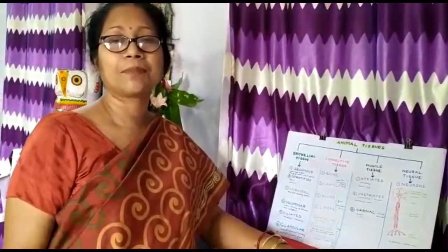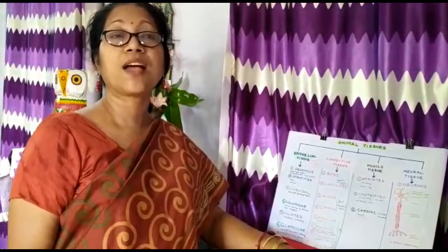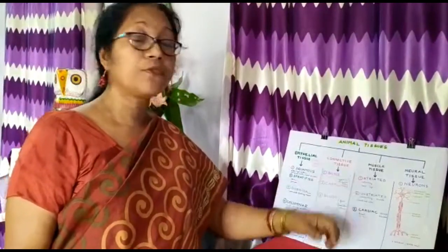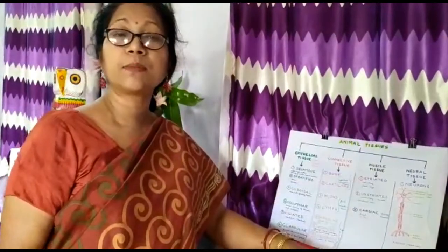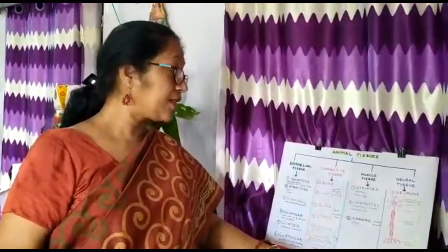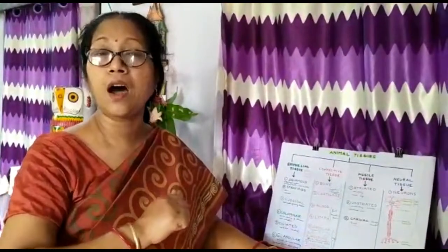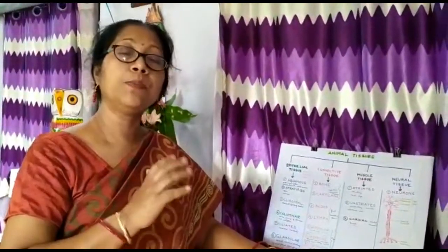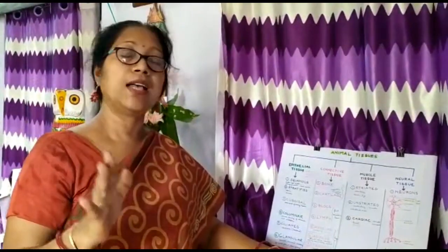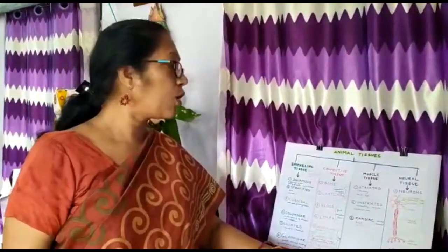Then we have cardiac muscles. Cardiac muscles also have striations, but the difference from striated muscles is that they are branched. Cardiac muscles are found only in the heart, and they keep on working — as long as we live, the cardiac muscles keep on working.